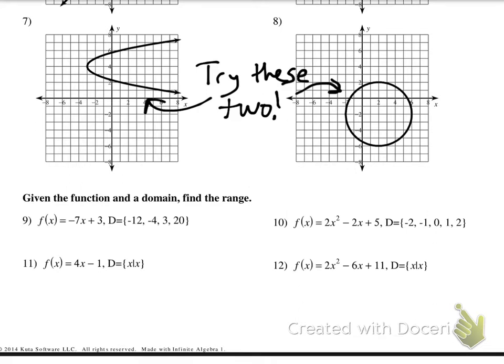All right, now given the function and domain, find the range. We haven't done many of these right here. We've done stuff like this but not find the range with this vocabulary. I know the domain is right here: negative 12, negative 4, 3, and 20. So I'm gonna put that into a table to find the output, to find the range. I'm just gonna plug that into my function right here, negative 7X plus 3. So let's plug in our first input, negative 12. We calculate that, we get 85.